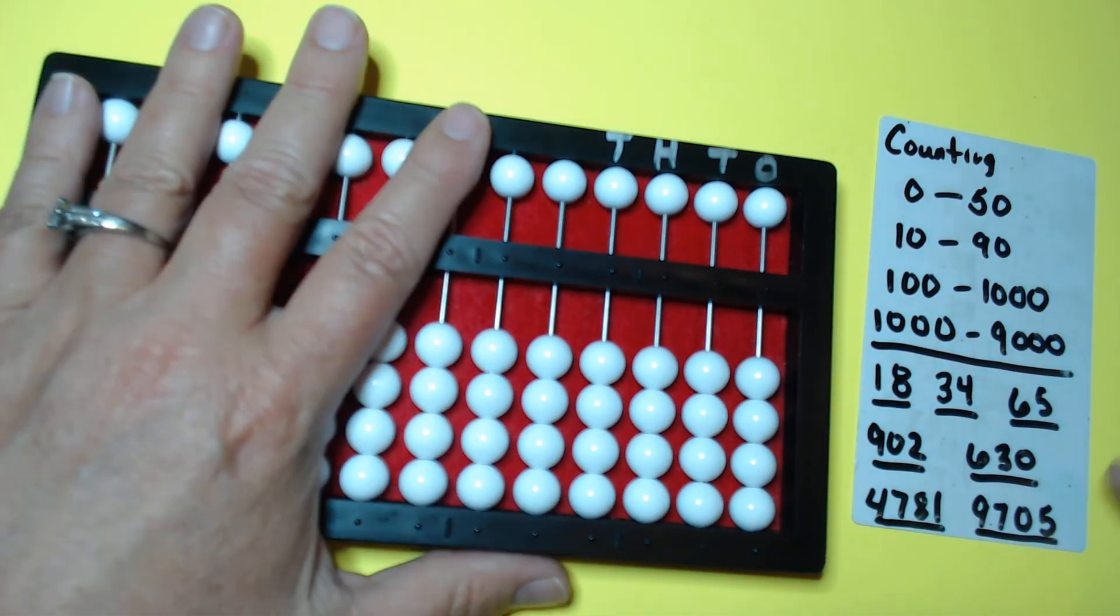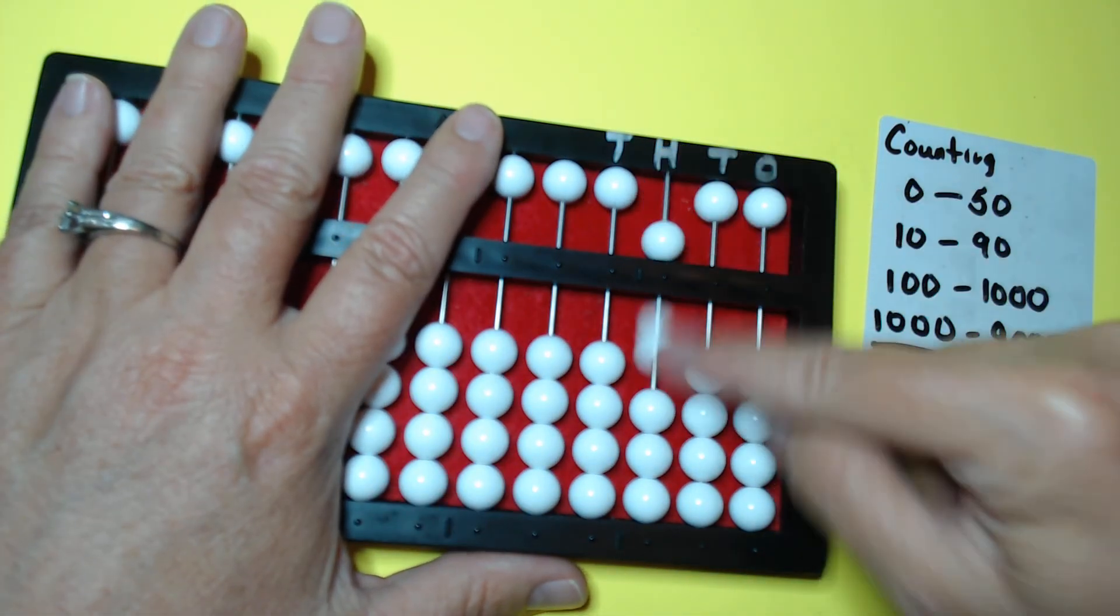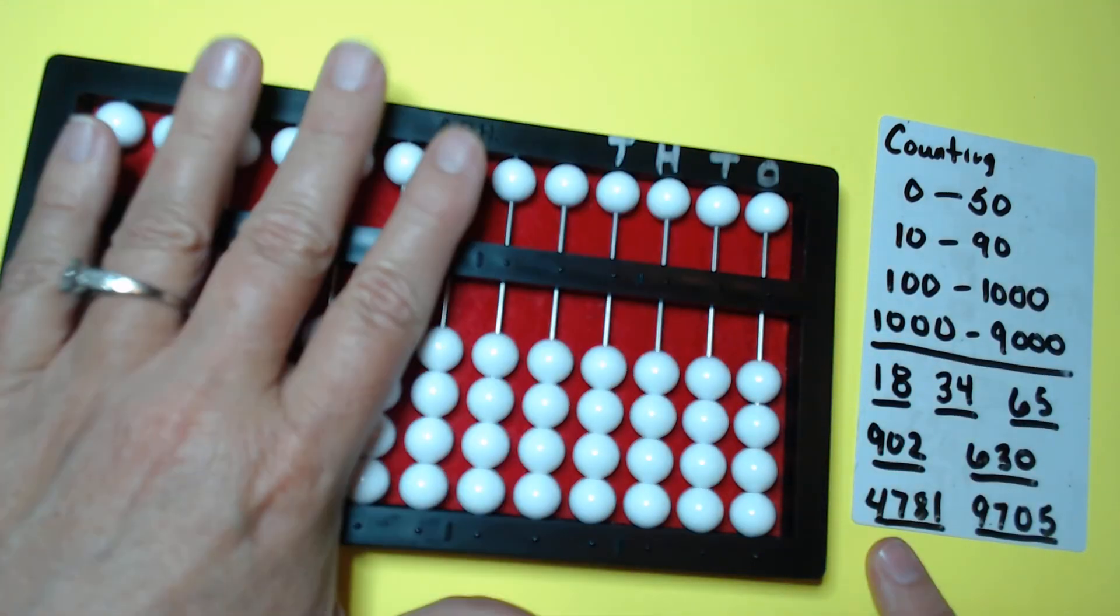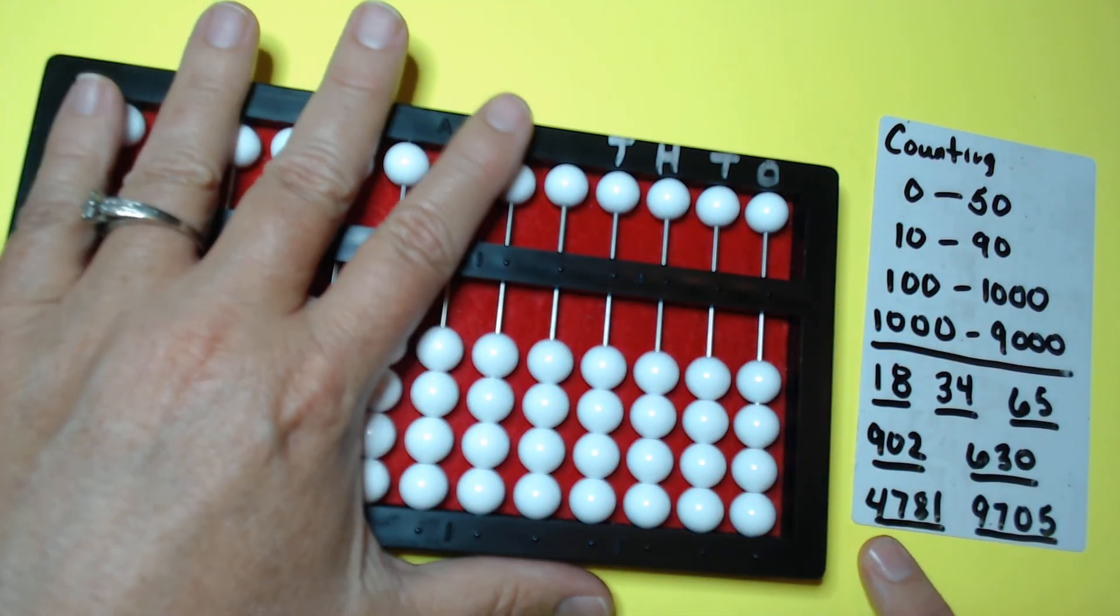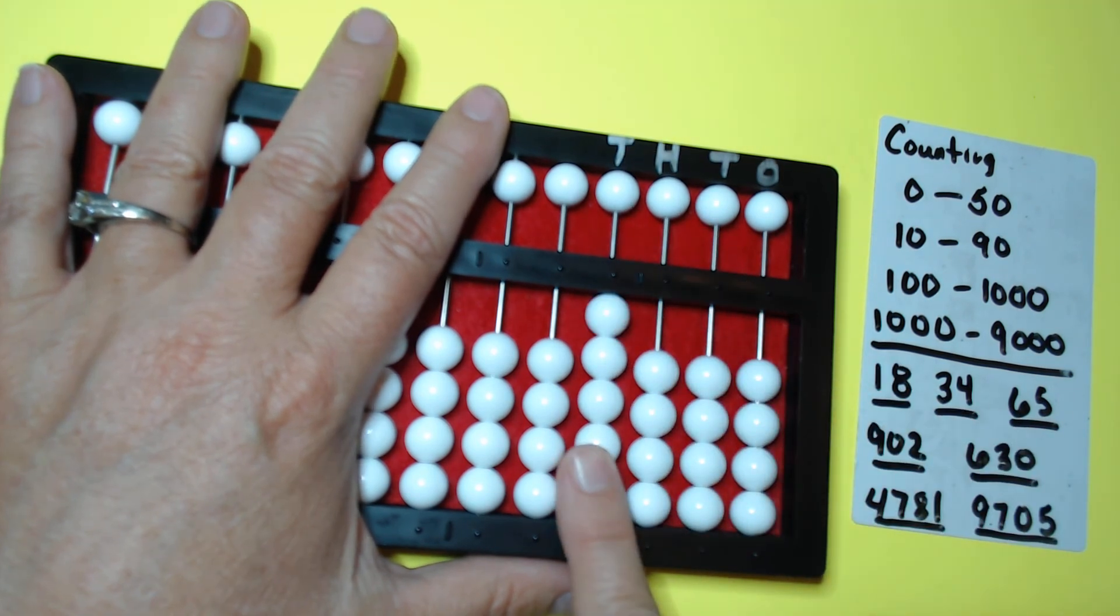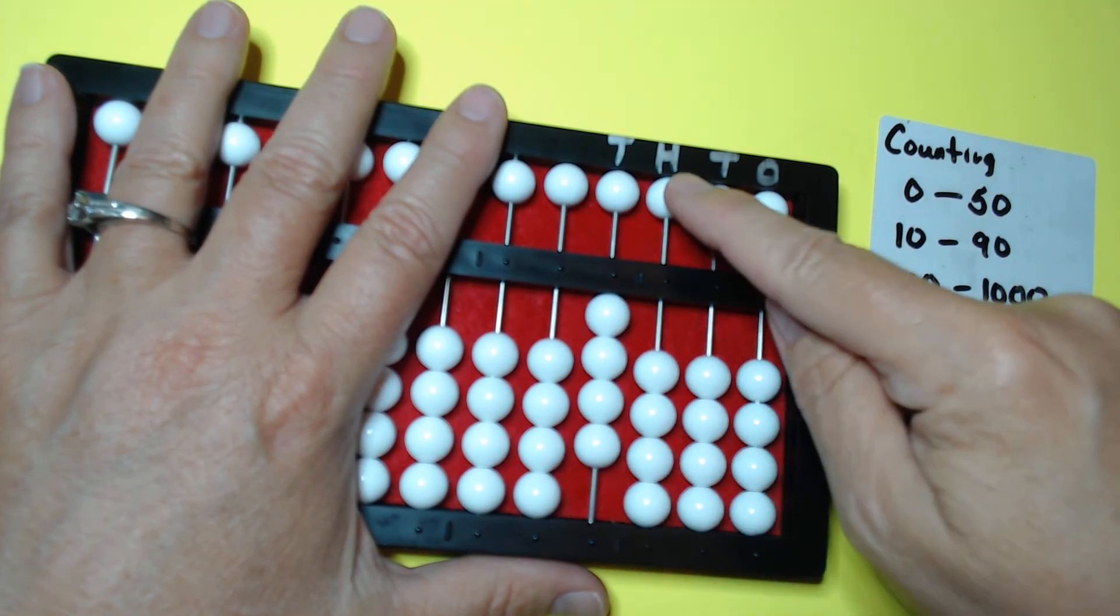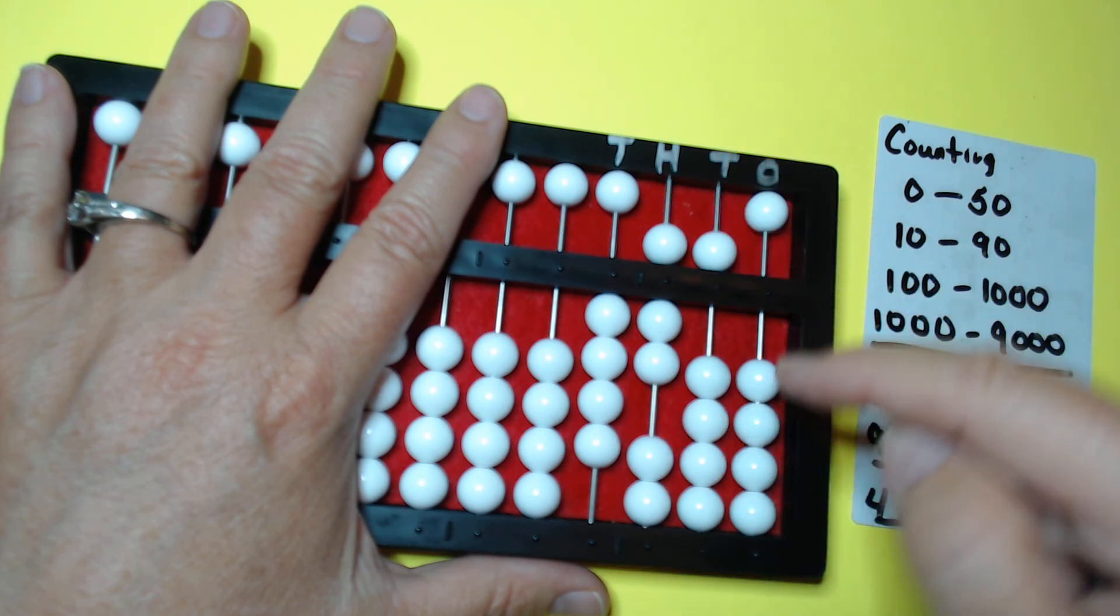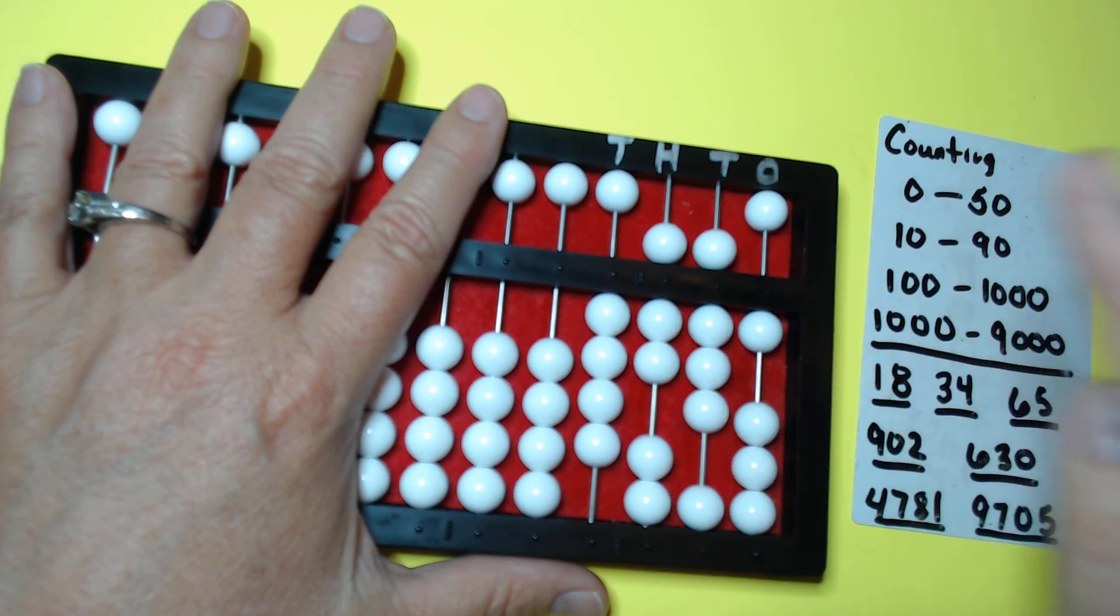Alright, six hundred thirty. So that's five hundred. Six hundred thirty. Got it, got it, got it. Now we're in the thousands column. So we're four thousand. So here we are. Four thousand, seven hundred. So five, six, seven, eighty. So fifty, sixty, seventy, eighty. One.